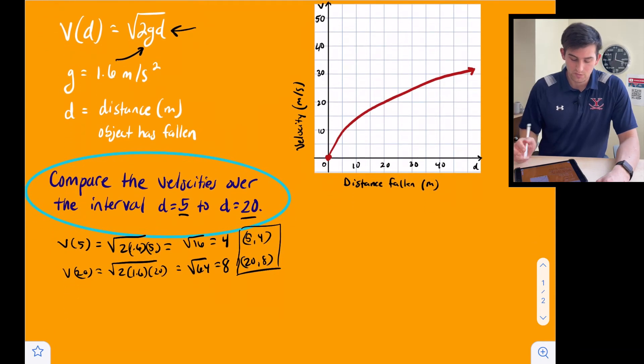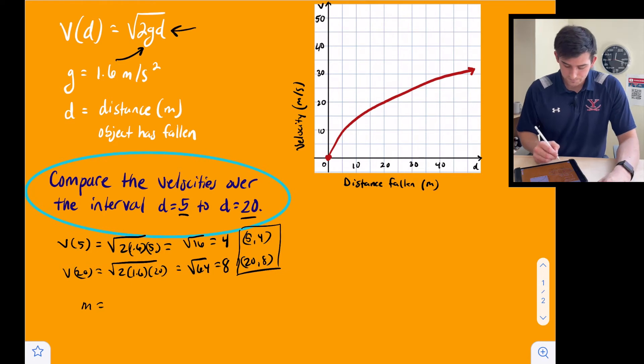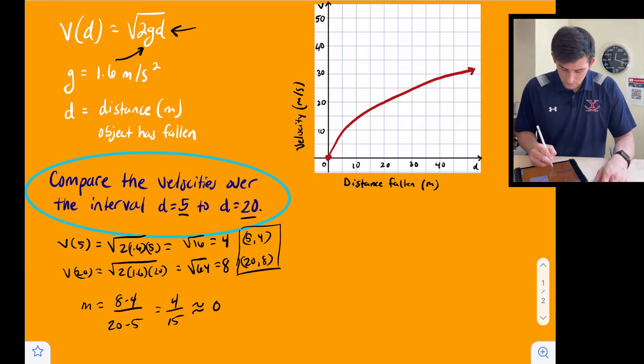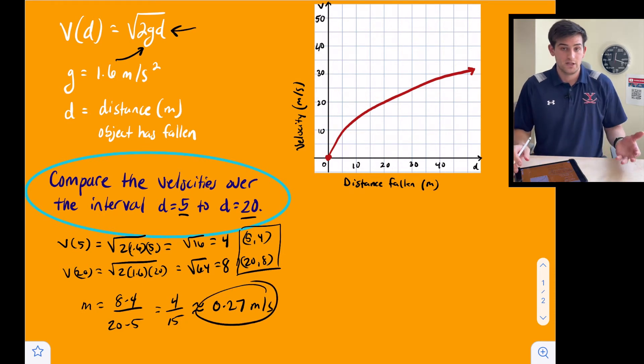We can say that m, the slope or rate of change, equals 8 minus 4 over 20 minus 5. This gives us 4 over 15, and when we type this in our calculator, this gives us approximately 0.27, and we'll write this as meters per second since it is a velocity.